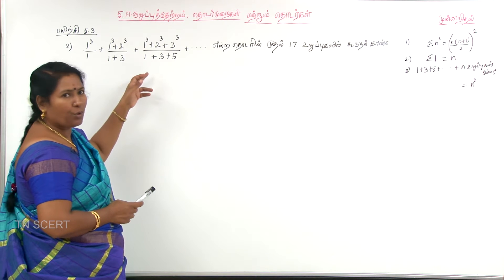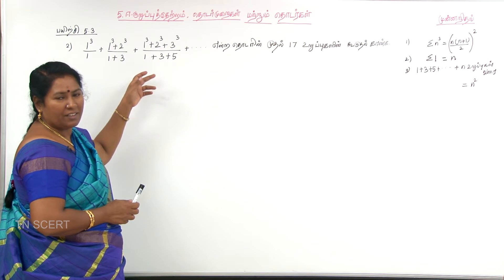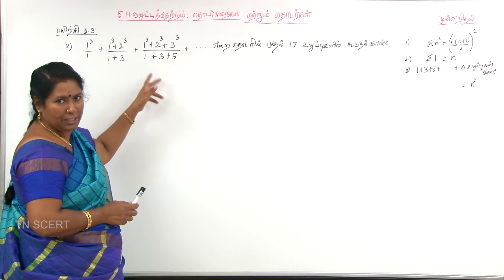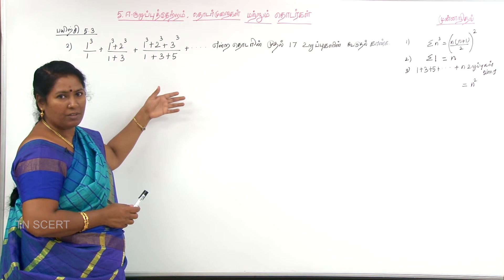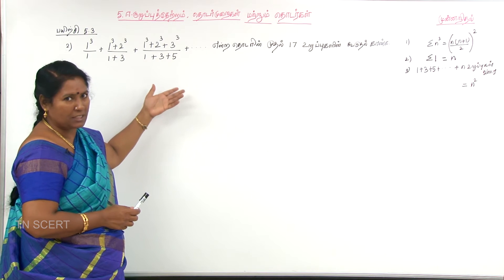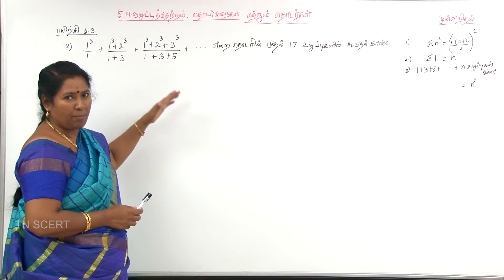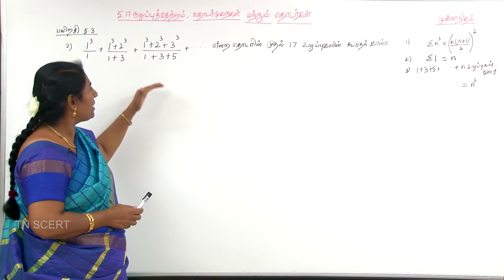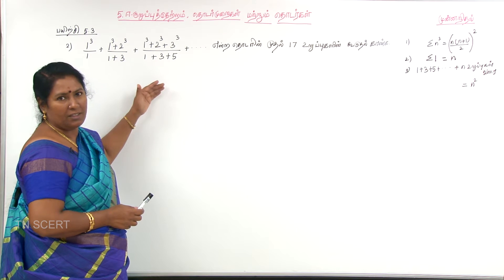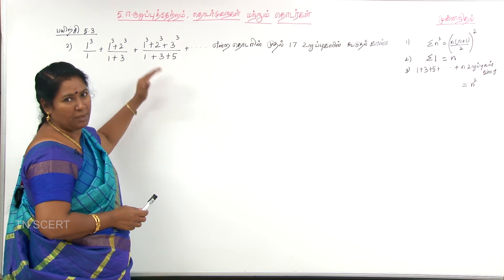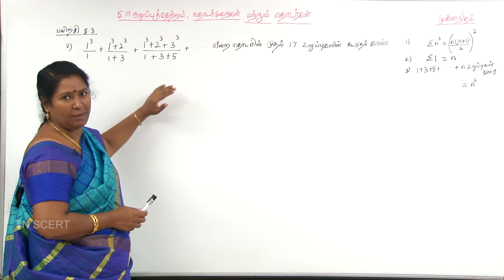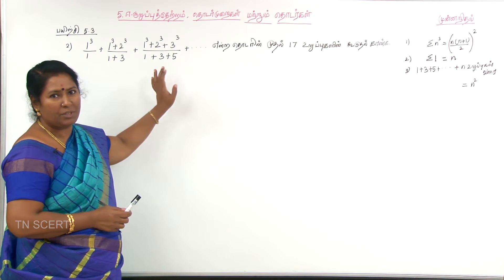1 cube, 2 cube, plus 2 cube, plus 3 cube. Then the top is 4 cube. What do you say? 1 plus 3 plus 5 plus 7.